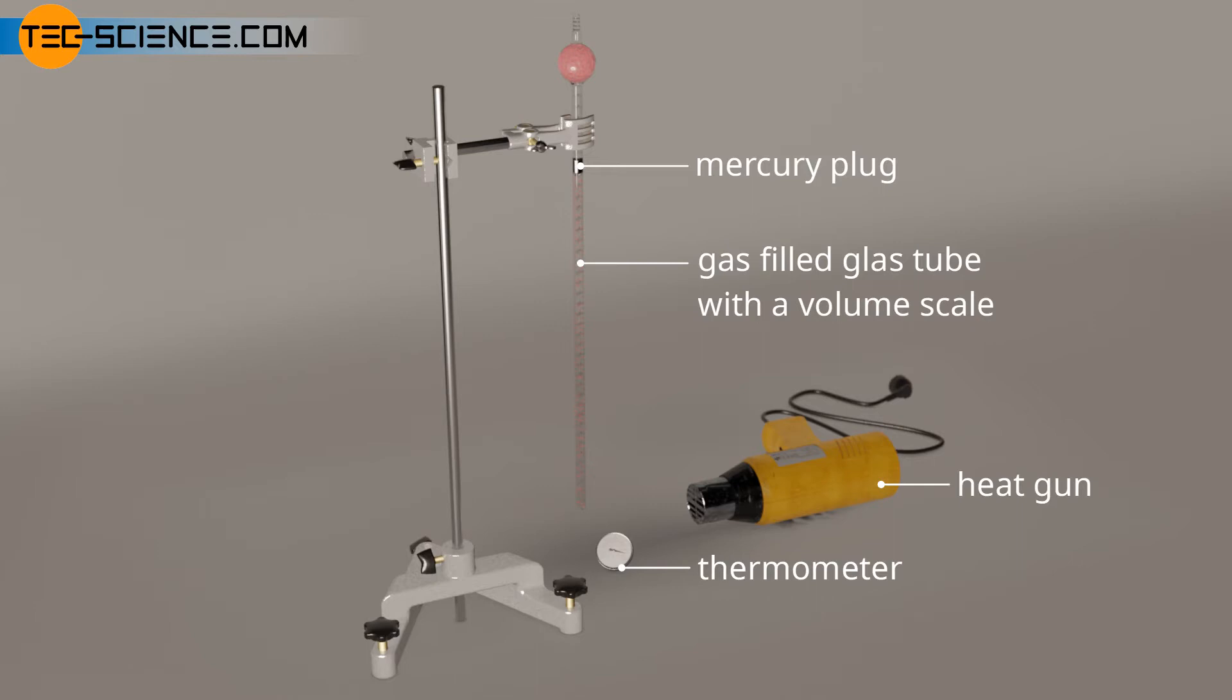The gas volume can therefore always adapt to the given temperature at a constant ambient pressure. The different temperatures can be adjusted for example with a heat gun. The volume which the gas occupies at a certain temperature can be read off directly from the scale on the glass tube.